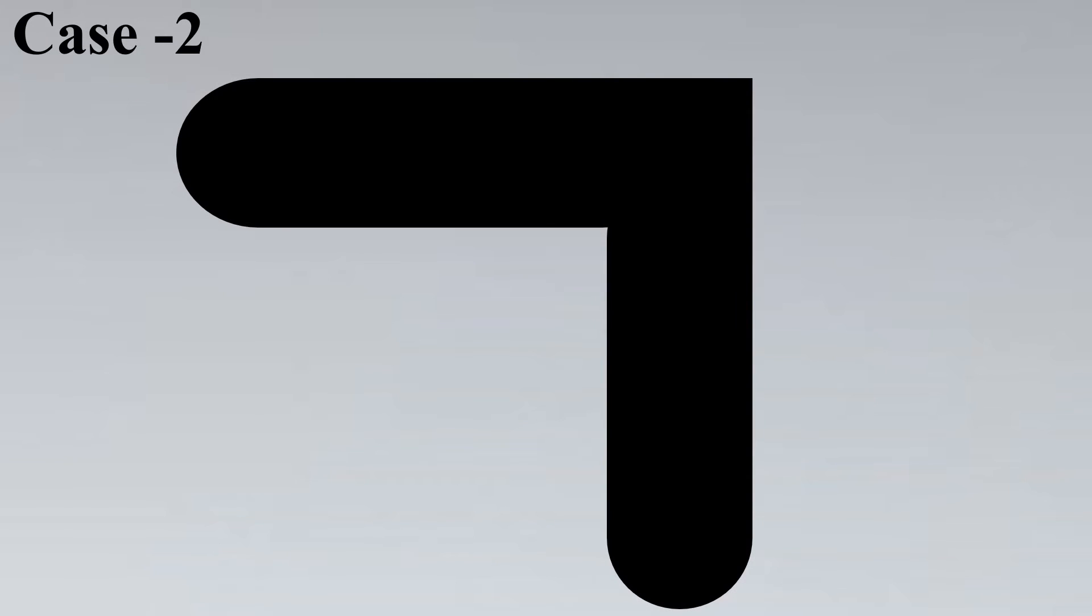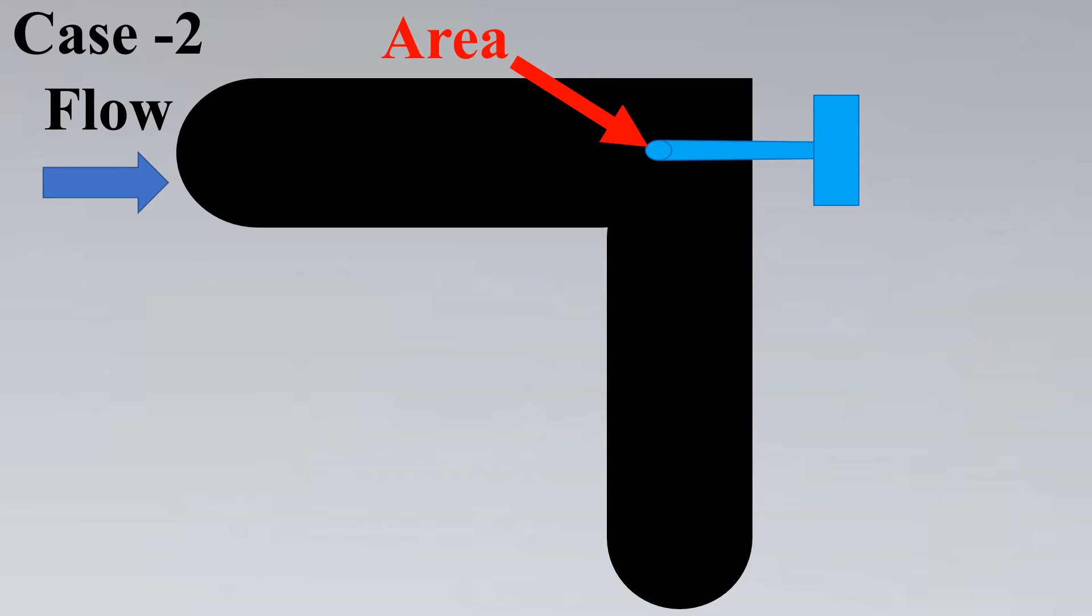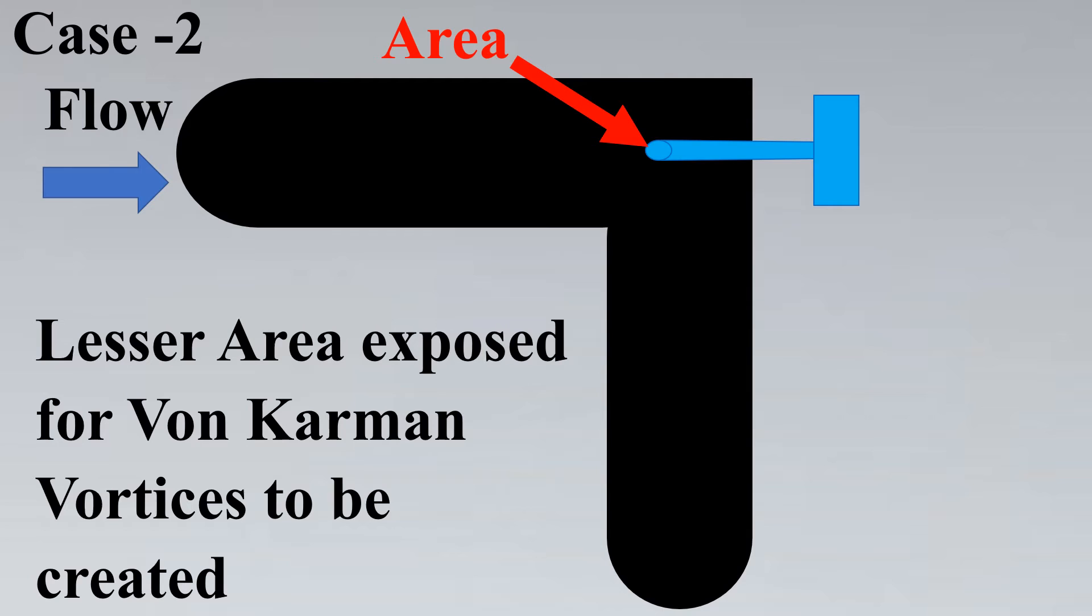Now let us look at case 2. In case 2, if you see this elbow and let's keep the flow direction same as previous case. However, we will change the installation of the thermowell. We install like this the tip facing towards the flow. Now do you see a difference? Let's see the area which is exposed towards the flow which is perpendicular to the flow. It's a very small area and thus the chances of vortex and vortices is greatly reduced and thus there would be less vibrations and thus we can significantly reduce the effect of vortex and vortices on the thermowell.